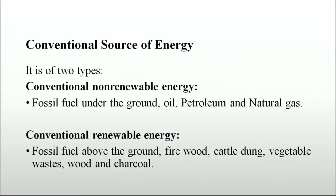Conventional sources of energy are of two types: conventional non-renewable energy, which includes fossil fuels under the ground — oil, petroleum and natural gas — while unconventional renewable energy sources include fossil fuels above the ground such as firewood, cattle dung, vegetable waste, wood and charcoal.